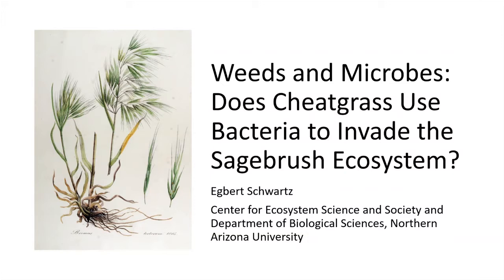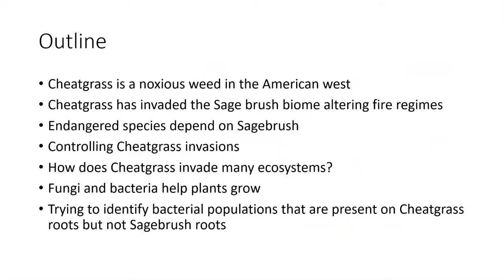This is an outline of my talk. First, I'm going to talk about cheatgrass as a noxious weed in the American West. Cheatgrass has invaded the sagebrush ecosystem and changed how often fires happen there, which has a very negative effect on the abundance of sagebrush. Then I will talk about how it is possible to control cheatgrass invasions, and then ask the question: how does cheatgrass manage to be so successful?